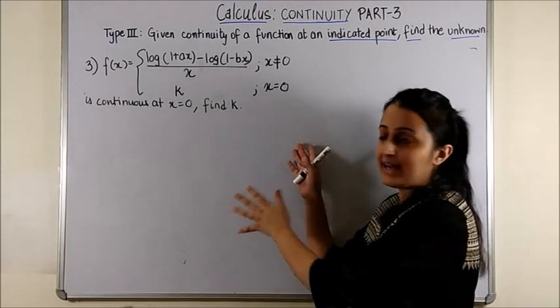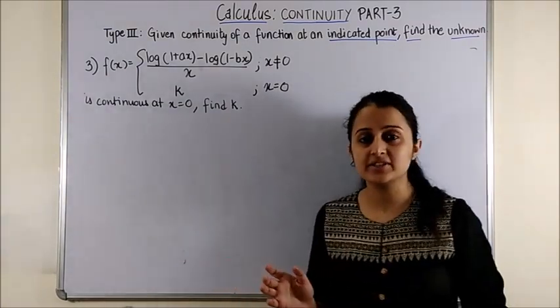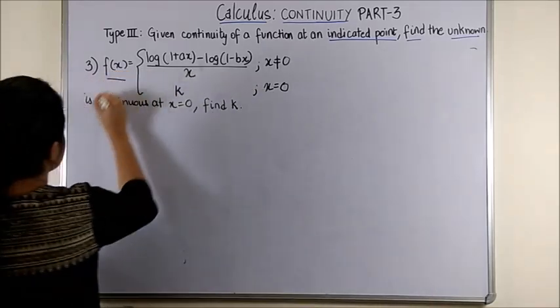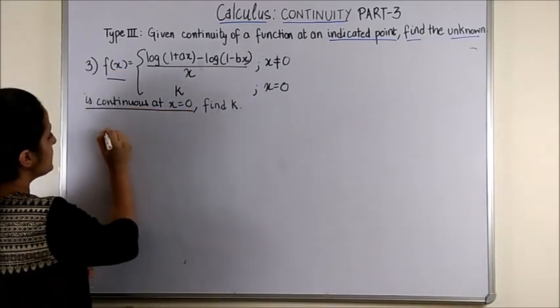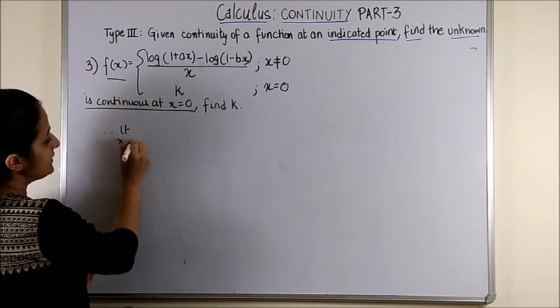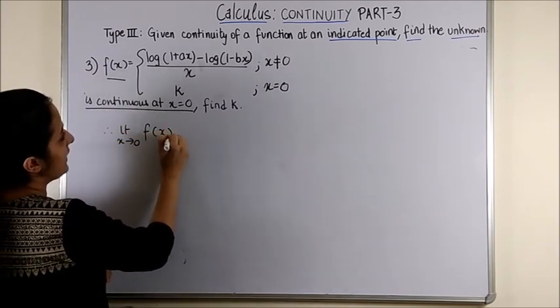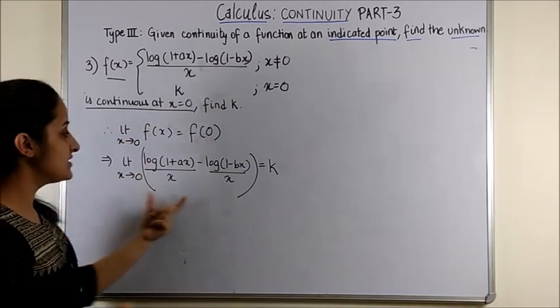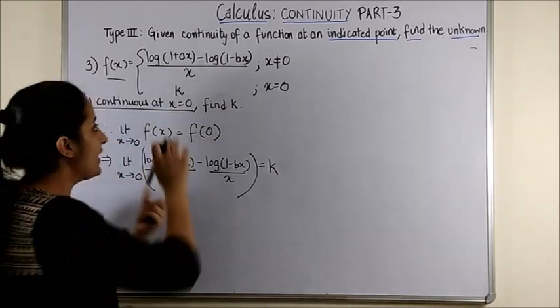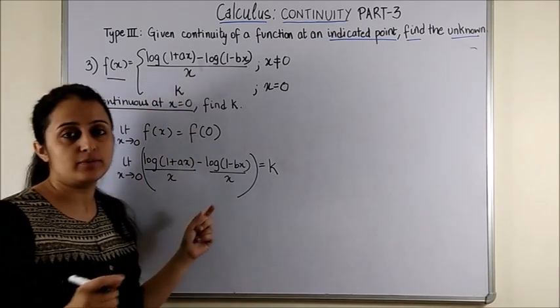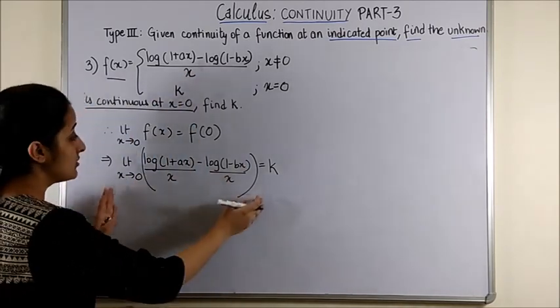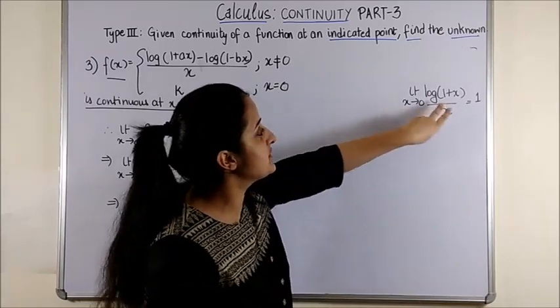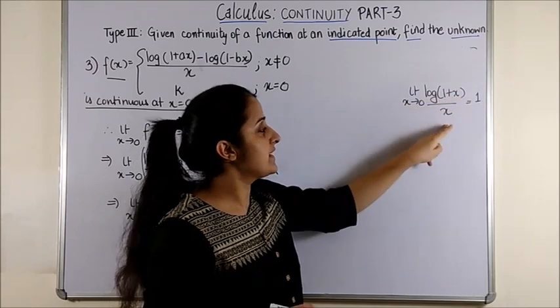I will look at the third question. Once again situation is the same so now let's tackle the problem. So fx is continuous at x equal to 0 therefore limit x tending to 0 so fx is f of 0. So on substituting the values this is what we get. Also I have just separated out x with each of the terms. So once again if you recollect this formula which said limit x tending to 0 log of 1 plus x upon x is equal to 1.